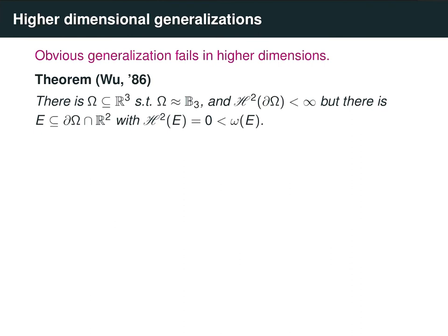When we move into higher dimensions, the techniques from complex analysis are no longer available, and in fact a lot of the results are different. You can't get results as nice as Bishop and Jones in the complex plane. For example, Yang Mei Wu showed that there exists a domain in R^3 that is homeomorphic to the unit ball — so in particular simply connected — whose boundary has finite measure, but there exists a subset with zero Hausdorff measure but positive harmonic measure, so harmonic measure and surface measure are singular. The moral is that even with strong conditions like simple connectedness, you need more structural information about your domain in higher dimensions.